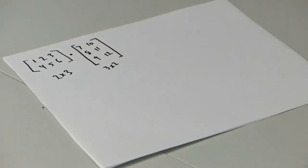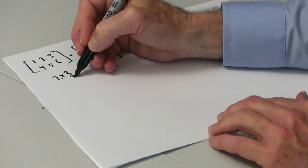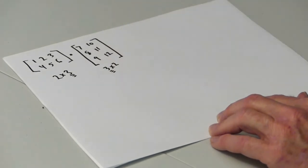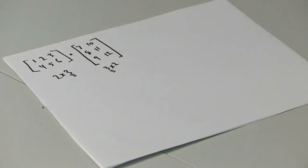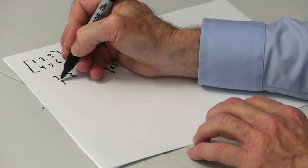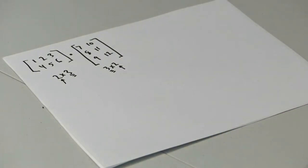In order to multiply the matrices, they must be compatible. That means that the number of columns in the first matrix must be the same as the number of rows in the second matrix. The result of the multiplication will have the same number of rows as the first matrix and the same number of columns as the second matrix. In this example, the result matrix will be 2 by 2.